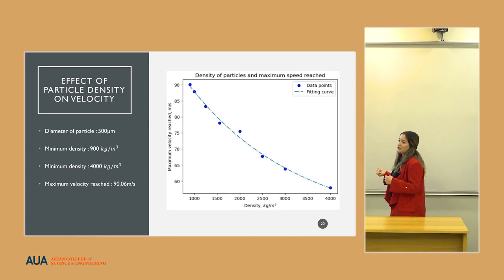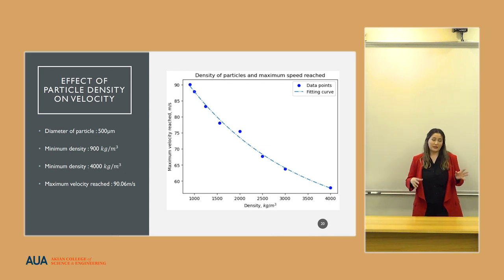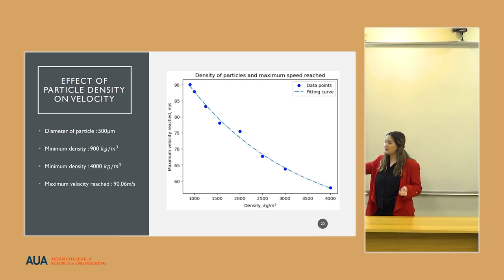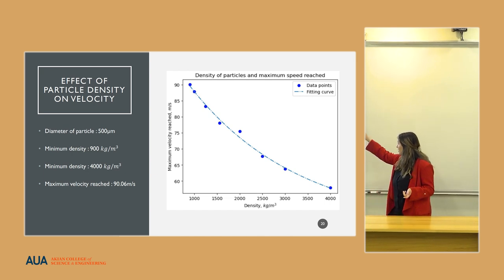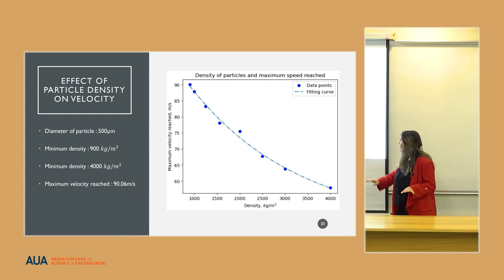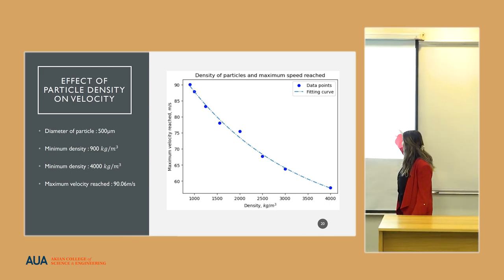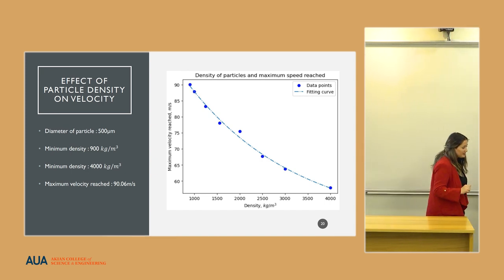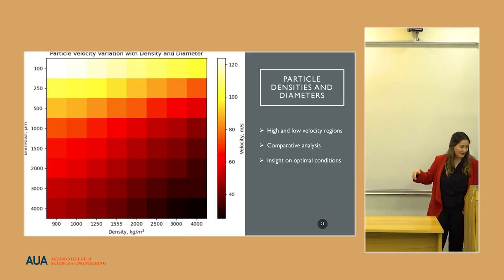But velocity is not dependent only on the diameter. It's also dependent on the density of the particle. Another experiment was conducted while we kept the diameter of the particle constant and changed the densities. As you can see, the relationship is inverse, and for denser particles we have lower velocities. We can see the ranges from 900 to 4000.